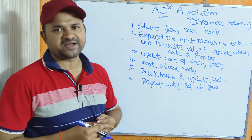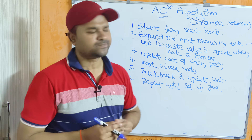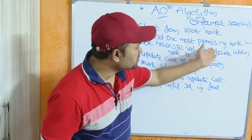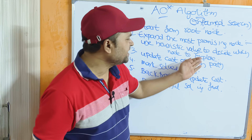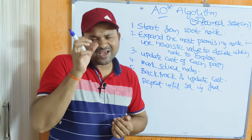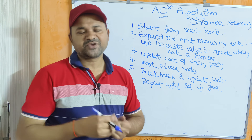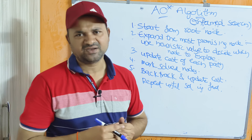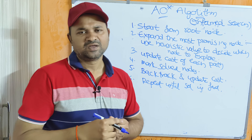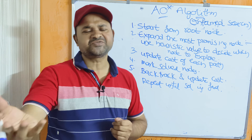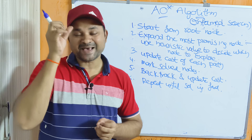Now let us see the AO* algorithm — there are 6 steps in total. Step 1: Start from the root node — the initial node is considered the root node. Step 2: Expand the most promising node. Use the heuristic value to decide which node to explore. To find the best node, calculate F(N) = G(N) + H(N), where H is the heuristic value and G(N) is the cost from the initial node to the current node.